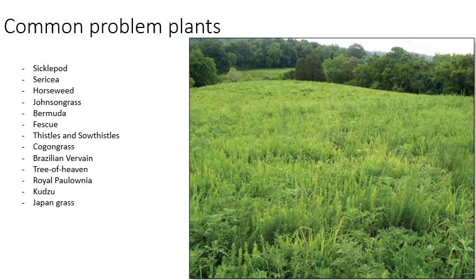If you were going to try to restore this field so that early successional wildlife species would benefit from it, you're almost forced into using herbicide, because there are no other ways to practically get rid of this weed problem. In particular, bermudagrass, fescue, cogongrass, and Japanese grass — and sericea likely falls into this same category — are species for which we have no other practical option except herbicides. Their presence causes wildlife value to plummet to near nothing in those communities.